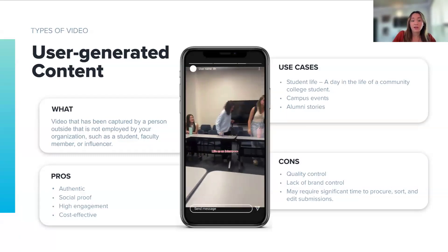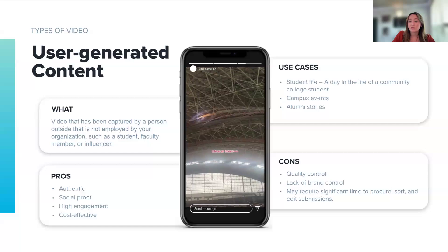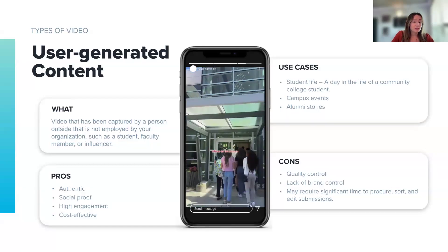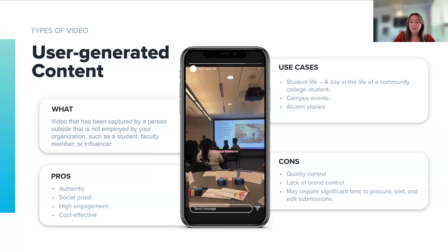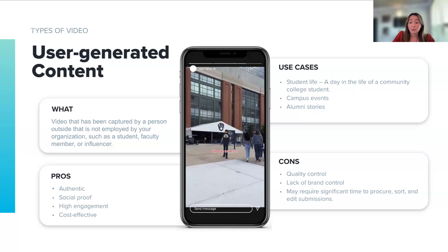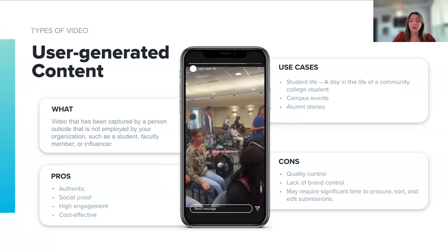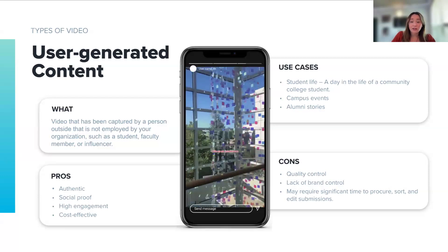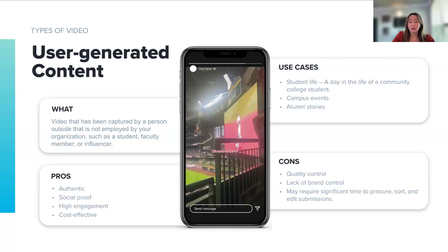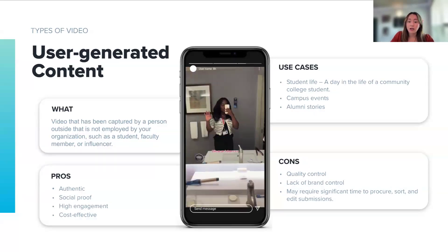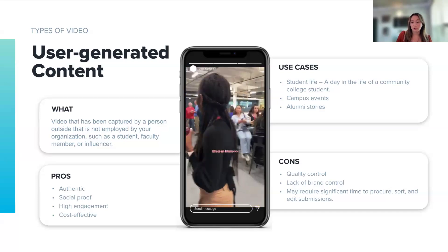Finally, we have user-generated content. The key difference between smartphone production and UGC is that someone outside of your organization or team is creating the content — think students, professors, or influencers. User-generated content is perfect for showcasing real-life student experiences, campus events, or alumni stories. The big pro here is social proof: people trust content that feels genuine, and user-generated content delivers that authenticity. It comes with challenges though — there's less control over quality and branding, and it can take time to collect, sort, and edit submissions. We'll talk more in webinar four about how you can partner with influencers and content creators to procure more user-generated content.